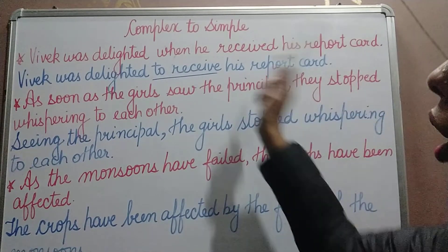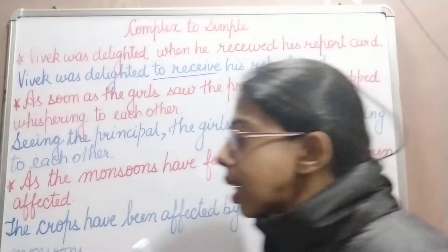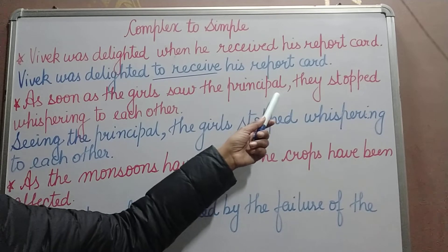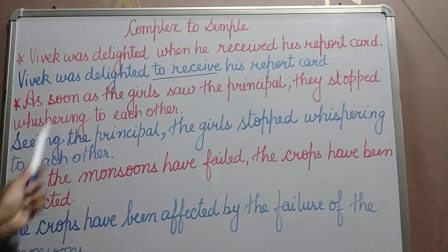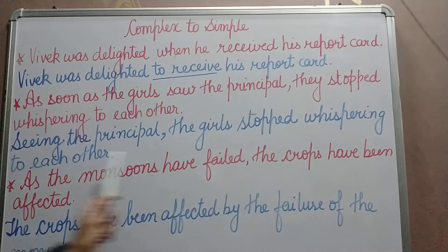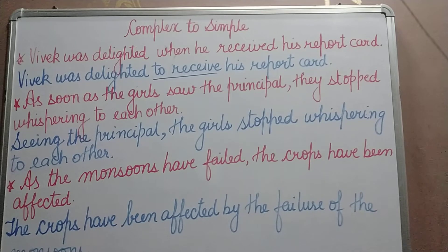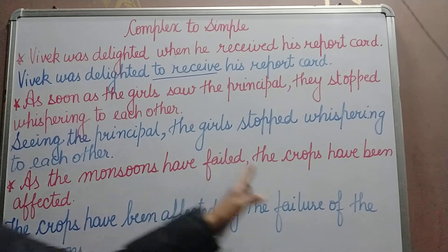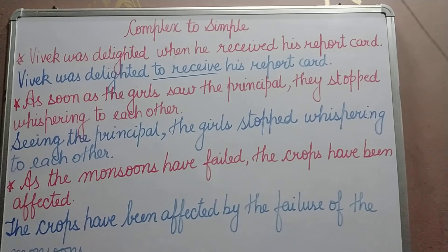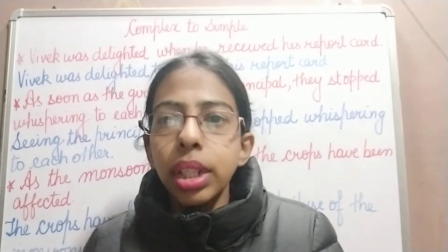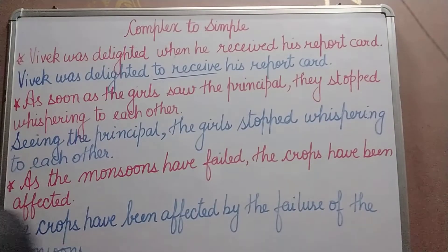Second example: 'As soon as the girls saw the principal, they stopped whispering to each other.' Converted: 'Seeing the principal, the girls stopped whispering to each other.' Third example: 'As the monsoons have failed, the crops have been affected.' Converted: 'The crops have been affected by the failure of the monsoons.' We are changing the dependent clause into a phrase by taking out the subject and verb and making it a simple sentence.